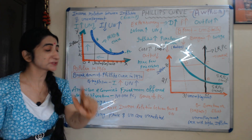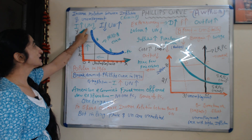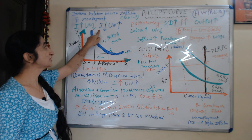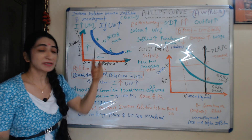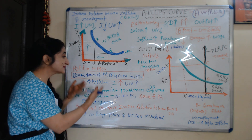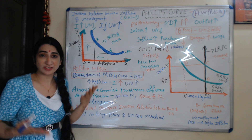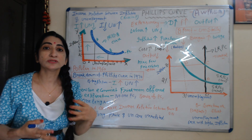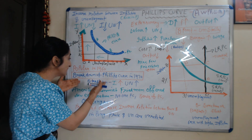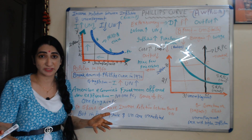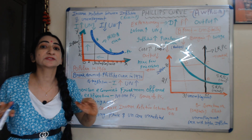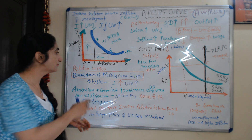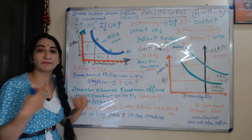But according to the Phillips Curve, when inflation rises, unemployment reduces, and when inflation reduces, unemployment rises. But in stagflation, both inflation and unemployment are rising together. In 1970, the Phillips Curve was not able to explain this. That is why this period is called the breakdown of the Phillips Curve.